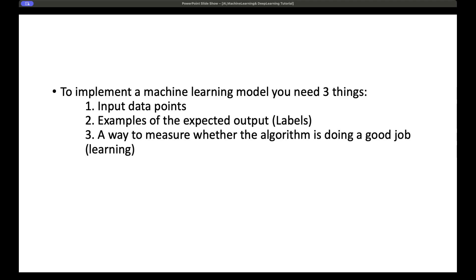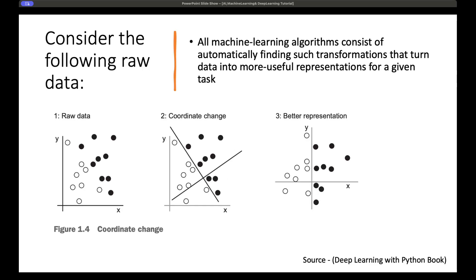Whenever you are building a machine learning model you basically need three things: first, the input data points; second, examples of expected output, known as the labels; and third, a way to measure whether the algorithm is doing well — whether the model is actually learning in the correct manner. These are the three basic things you need to build a machine learning model.